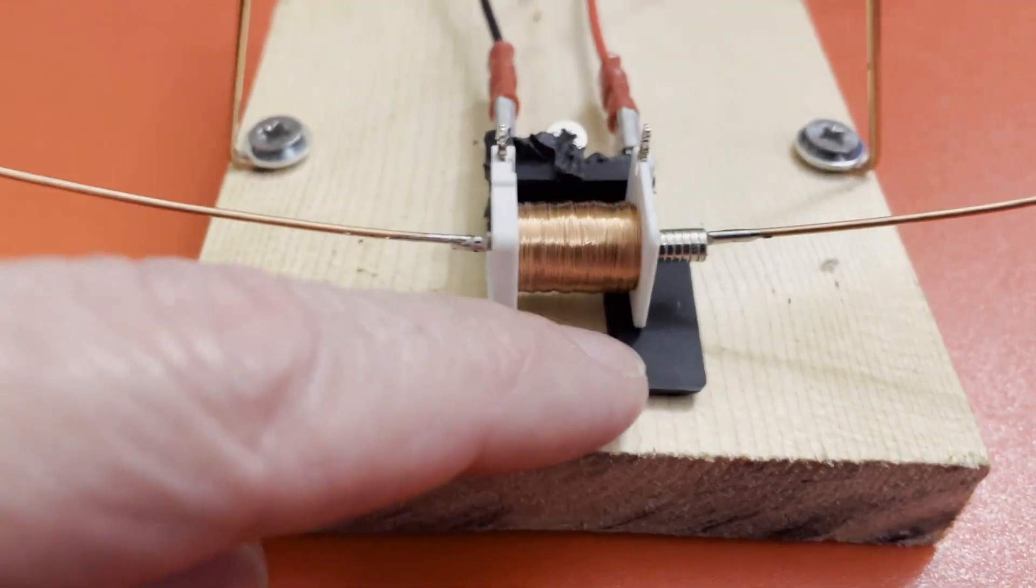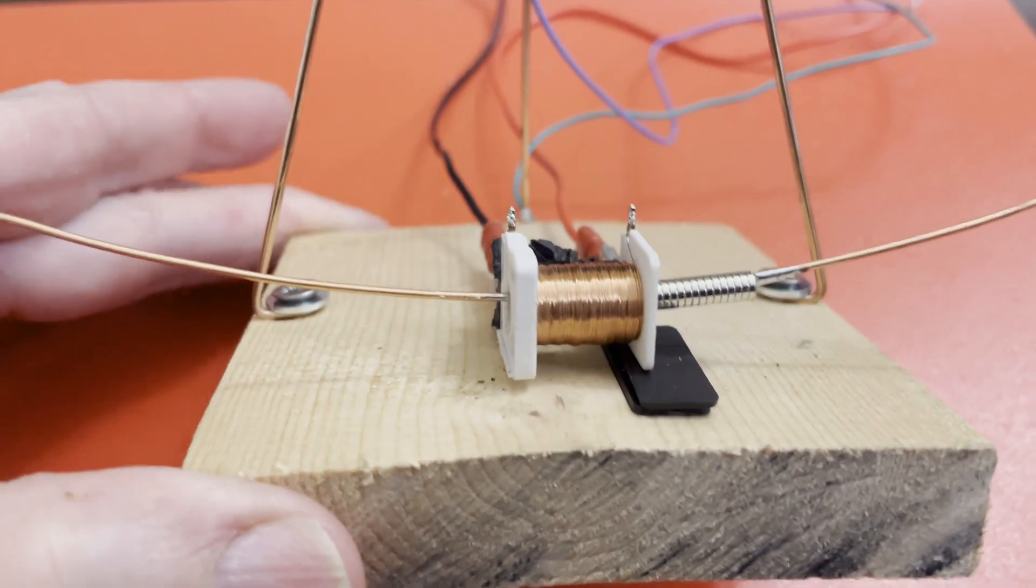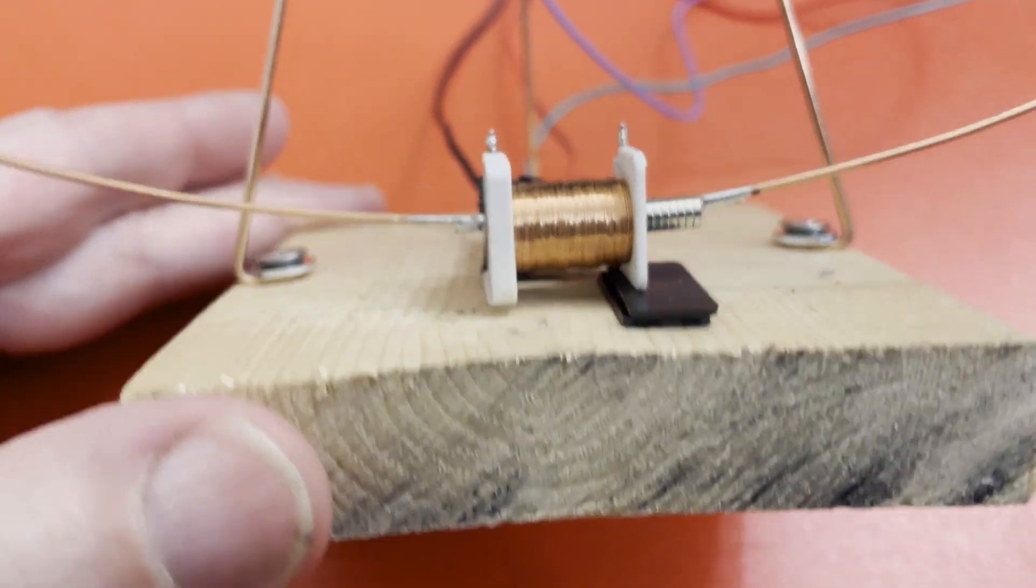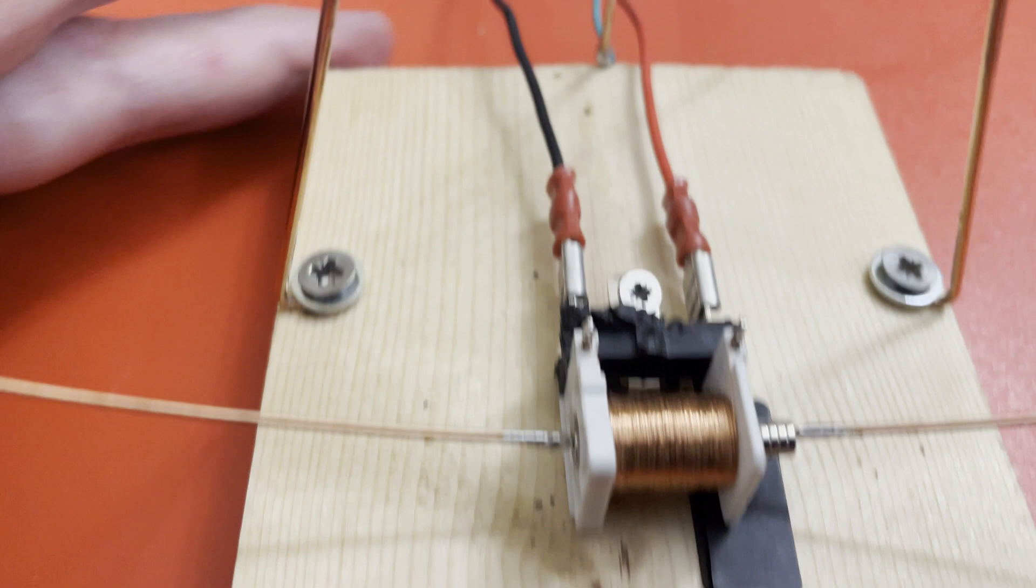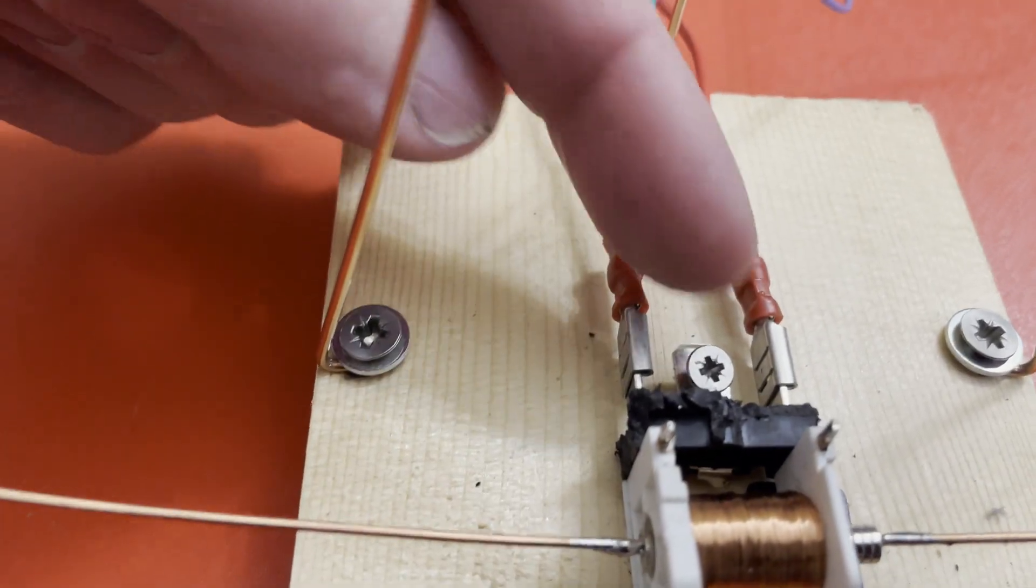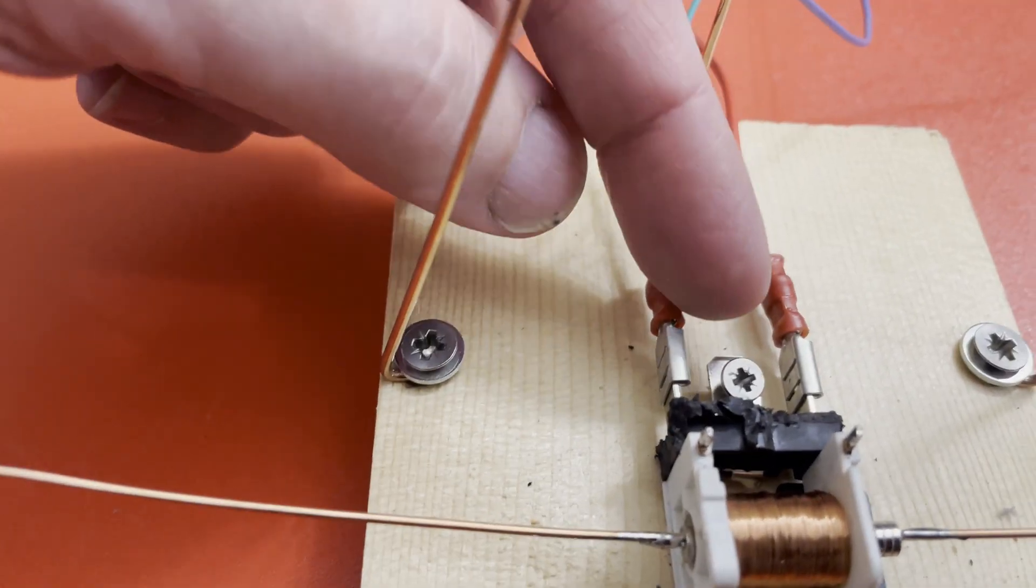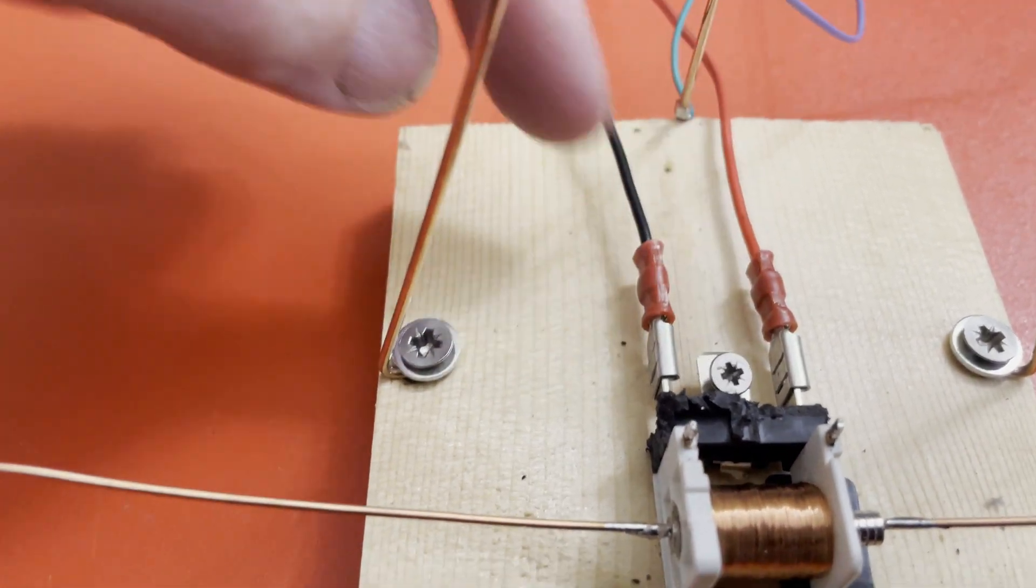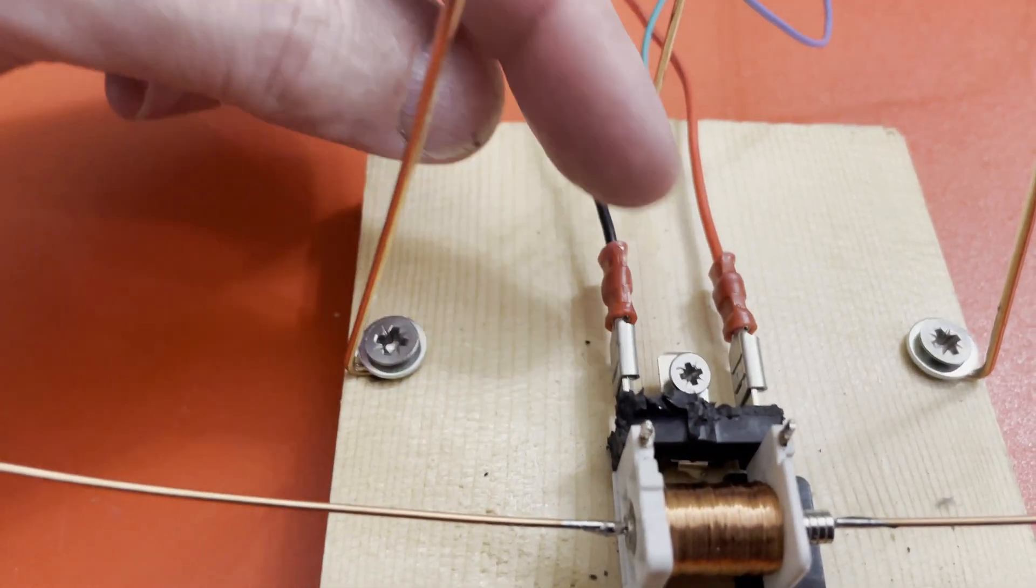The bit of packing there is because that coil has different size ends on it so it doesn't sit level on its own. When I took it apart I left that center tag in and broke the contact off the inside and that just happened to be very convenient to put a screw through it to hold it down.